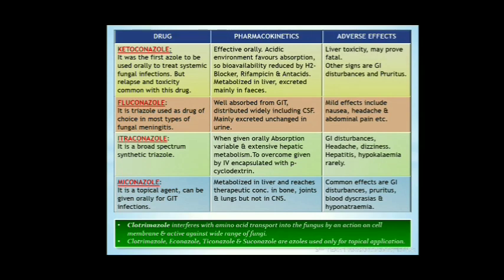Fluconazole is a triazole which is drug of choice in most types of fungal meningitis. It is well absorbed from the GI tract, distributed widely including in CSF, and mainly excreted unchanged in urine. Mild effects include nausea, headache, and abdominal pain.